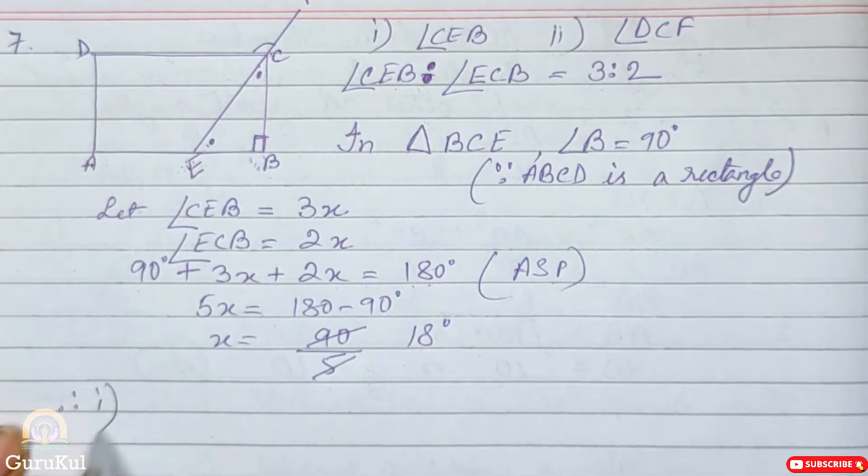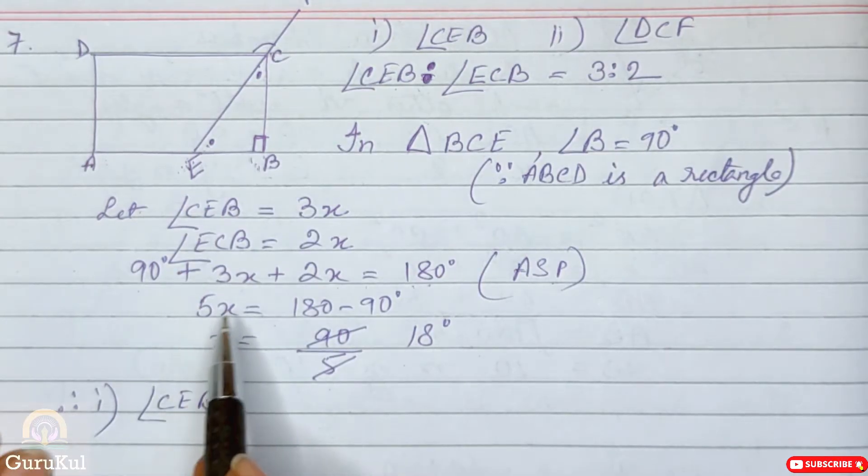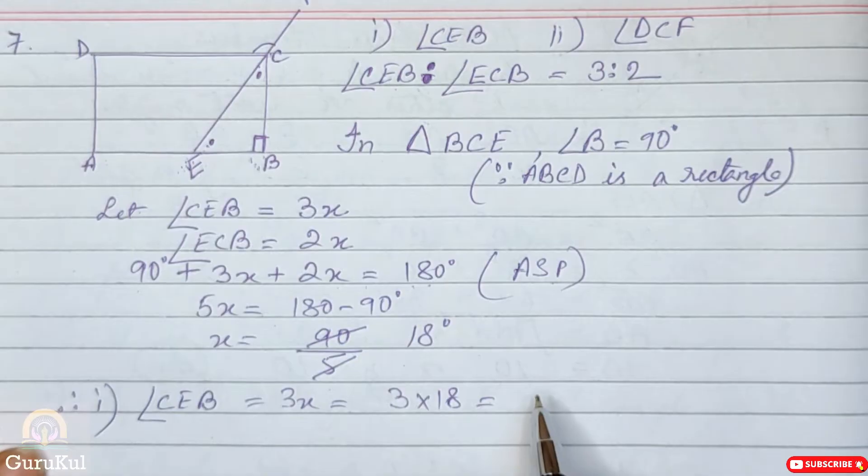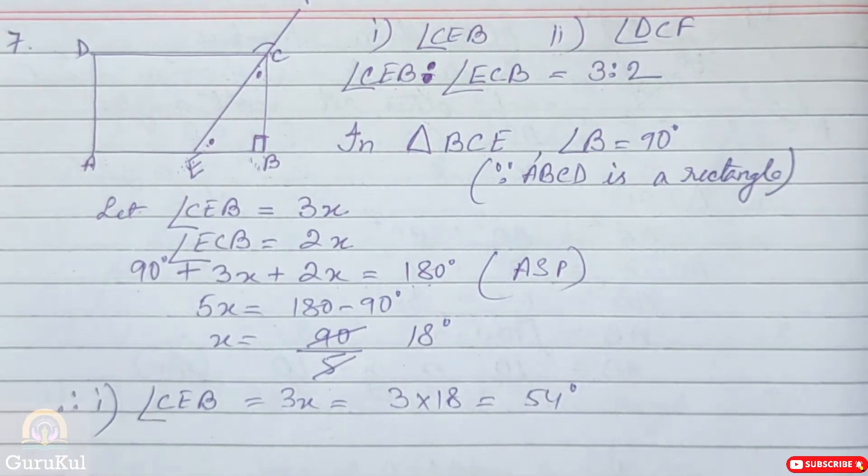Therefore, the first part which is angle CEB is equal to 3X which is equal to 3 into 18 that gives us 54 degree. First part done.